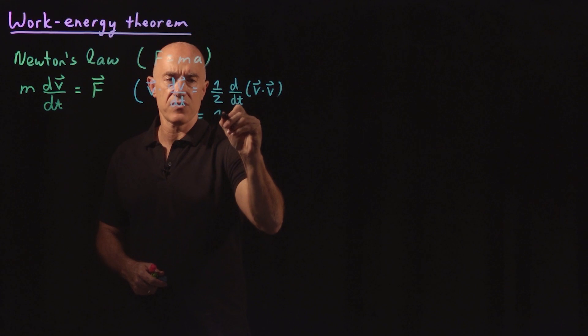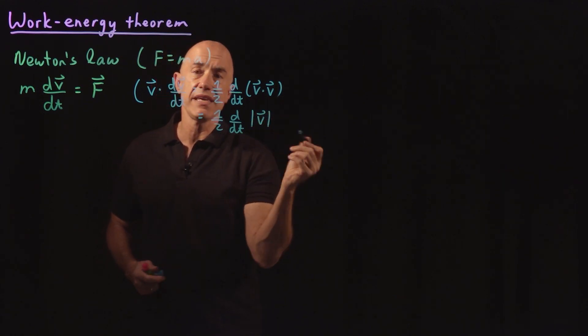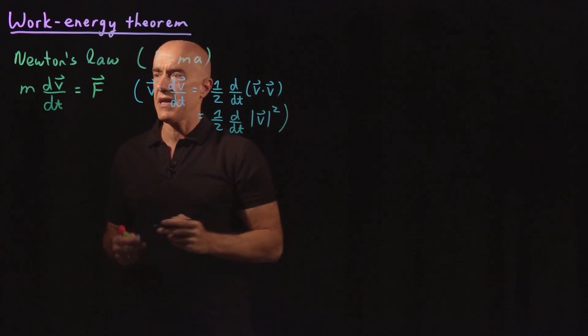And this is just one half d/dt of the magnitude of the speed squared. So that's an identity we're going to use.